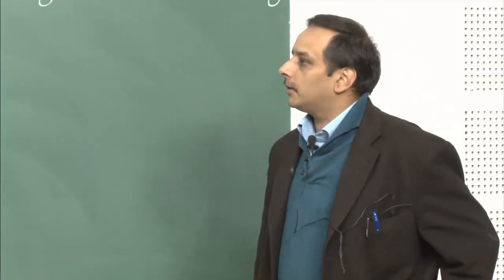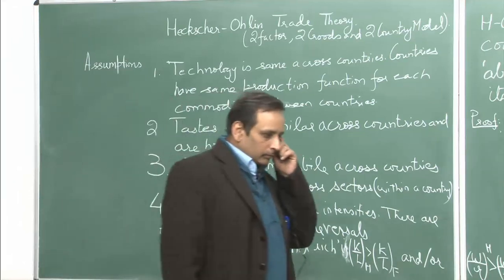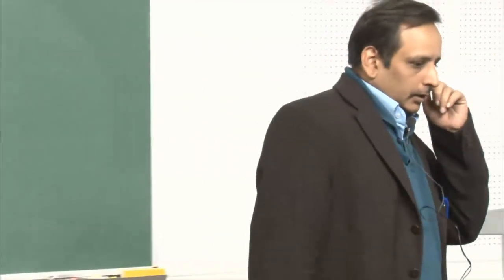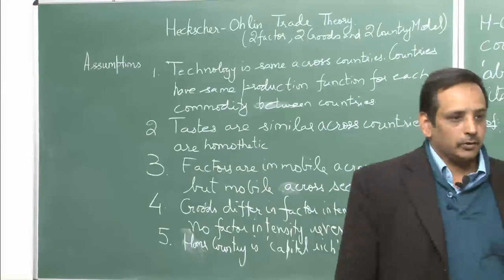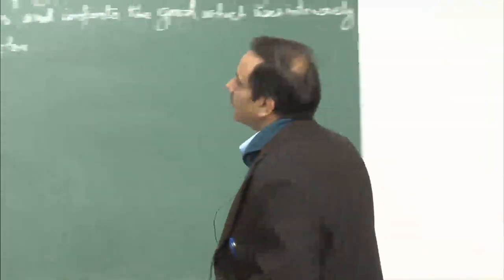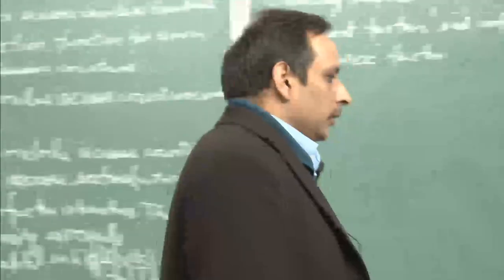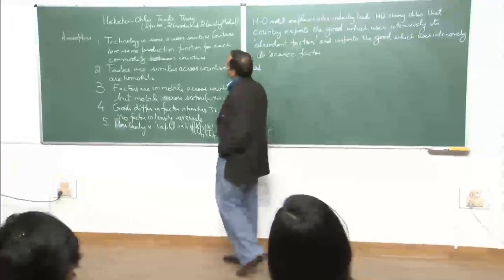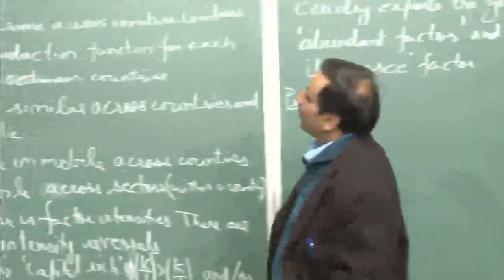Good afternoon. Today, we are going to talk about the Heckscher-Ohlin trade theory. This is the neoclassical trade theory. The first attempt was done by Professor Heckscher working in Lund University in Sweden. And then subsequently, his student after a 10-year gap worked on his PhD on regional trade in Europe. They were the ones who propounded the most famous of the trade theories, till Krugman contested the Heckscher-Ohlin trade theory.